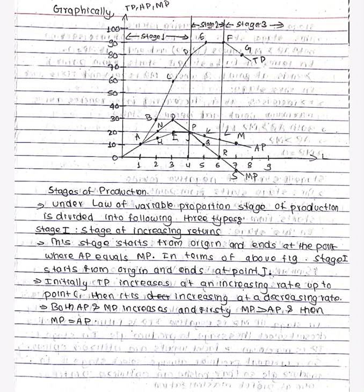First stage: up to the 4th unit. Second stage: from the 4th unit to the 6th unit. Seventh unit and beyond is negative — that is the third stage. Three distinct stages can be observed in the graph.